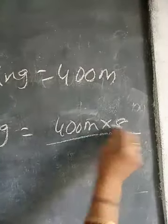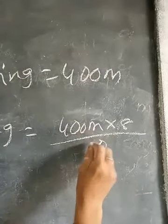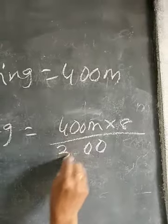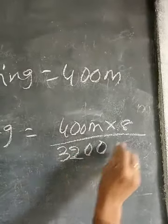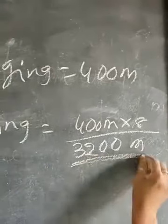You have to multiply: 400 times 8 equals 3200 meters.